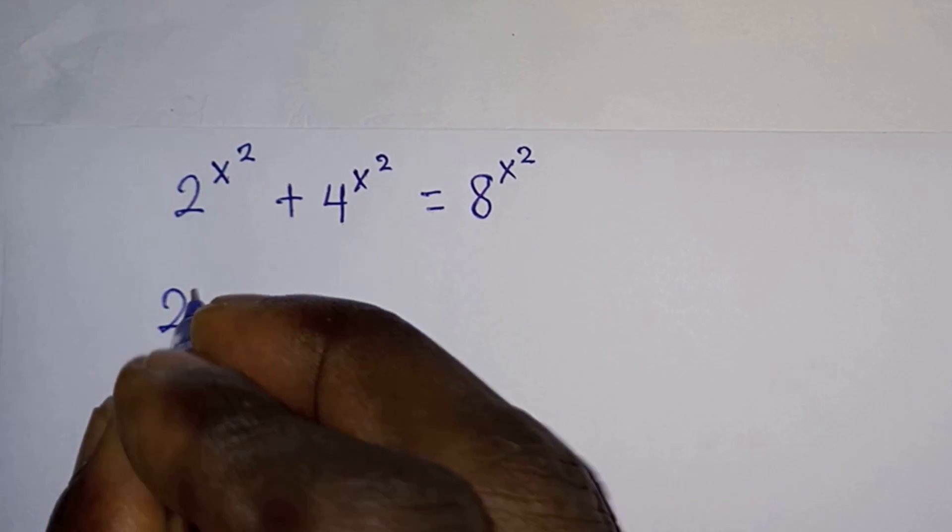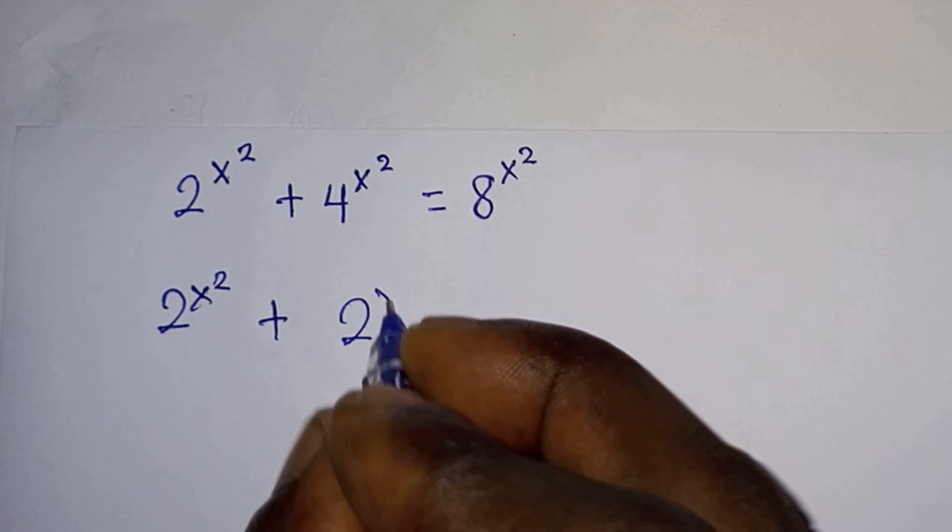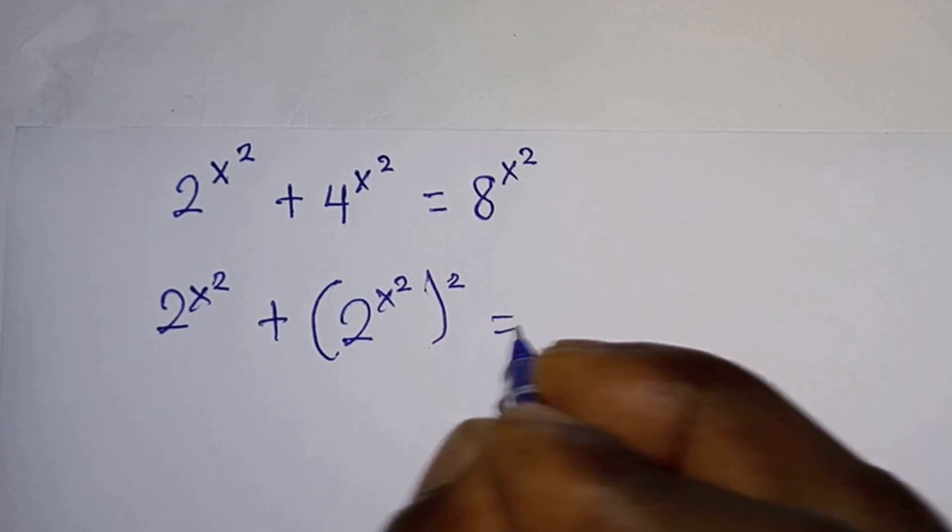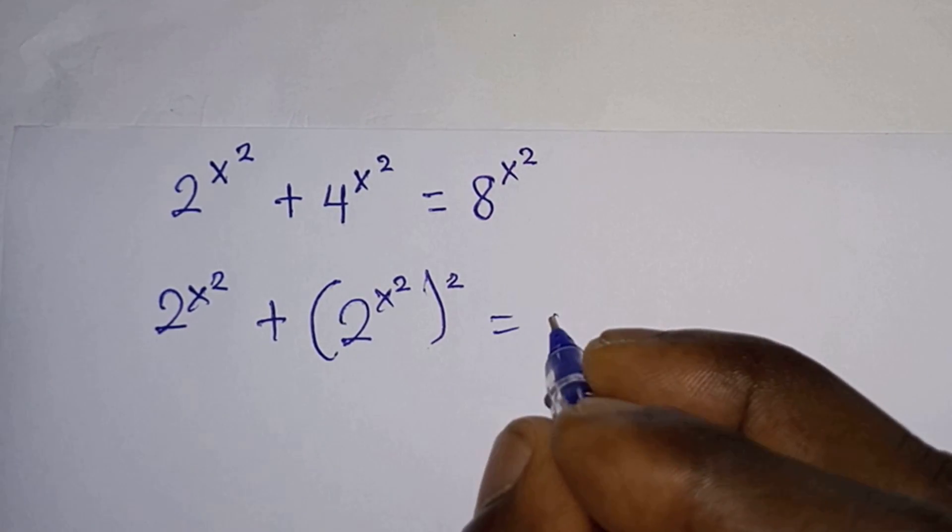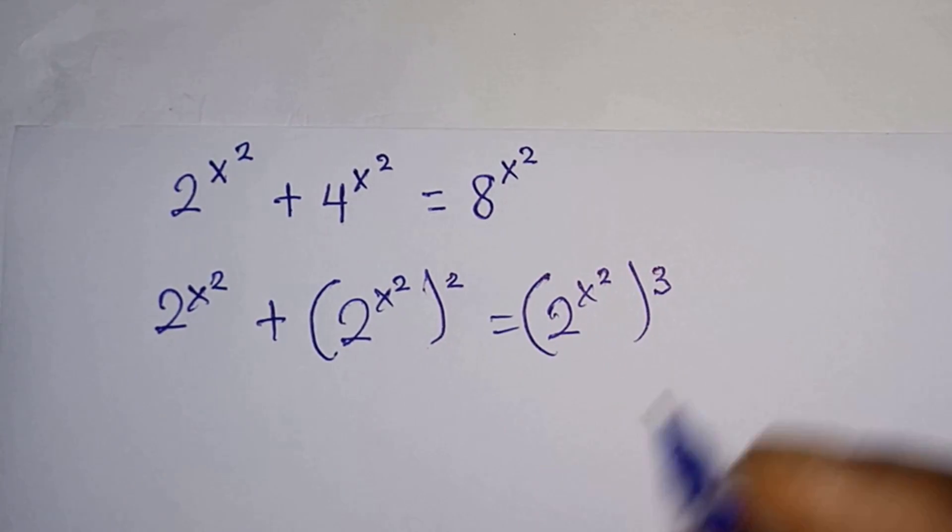We have 2^(x²) plus, we can write this as (2^(x²))² is equal to, we can also write this as (2^(x²))³.